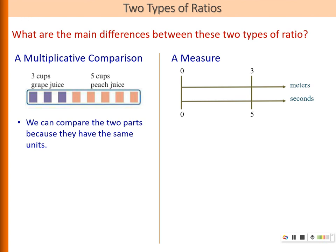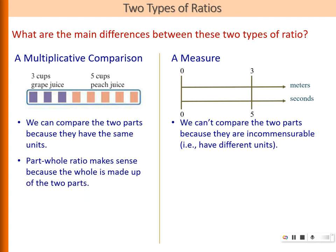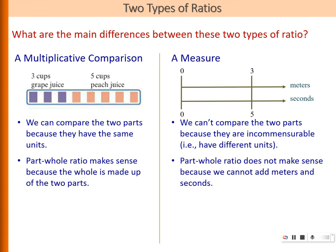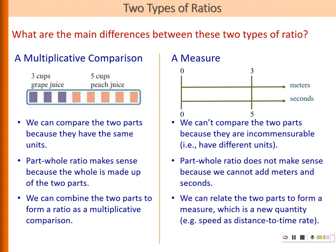For multiplicative comparison, we can compare the two parts because they have the same units. Whereas for a measure, we can't compare the two parts because they have different units. For the multiplicative comparison type of ratio, the part-whole conception makes sense because the whole is made up of two parts. Whereas for measure, the part-whole conception doesn't make sense because the number of units and number of seconds cannot be added. Another difference is that we can combine the two parts to form a ratio as a multiplicative comparison, whereas for measure, we relate the two components to form a new measure or quantity.